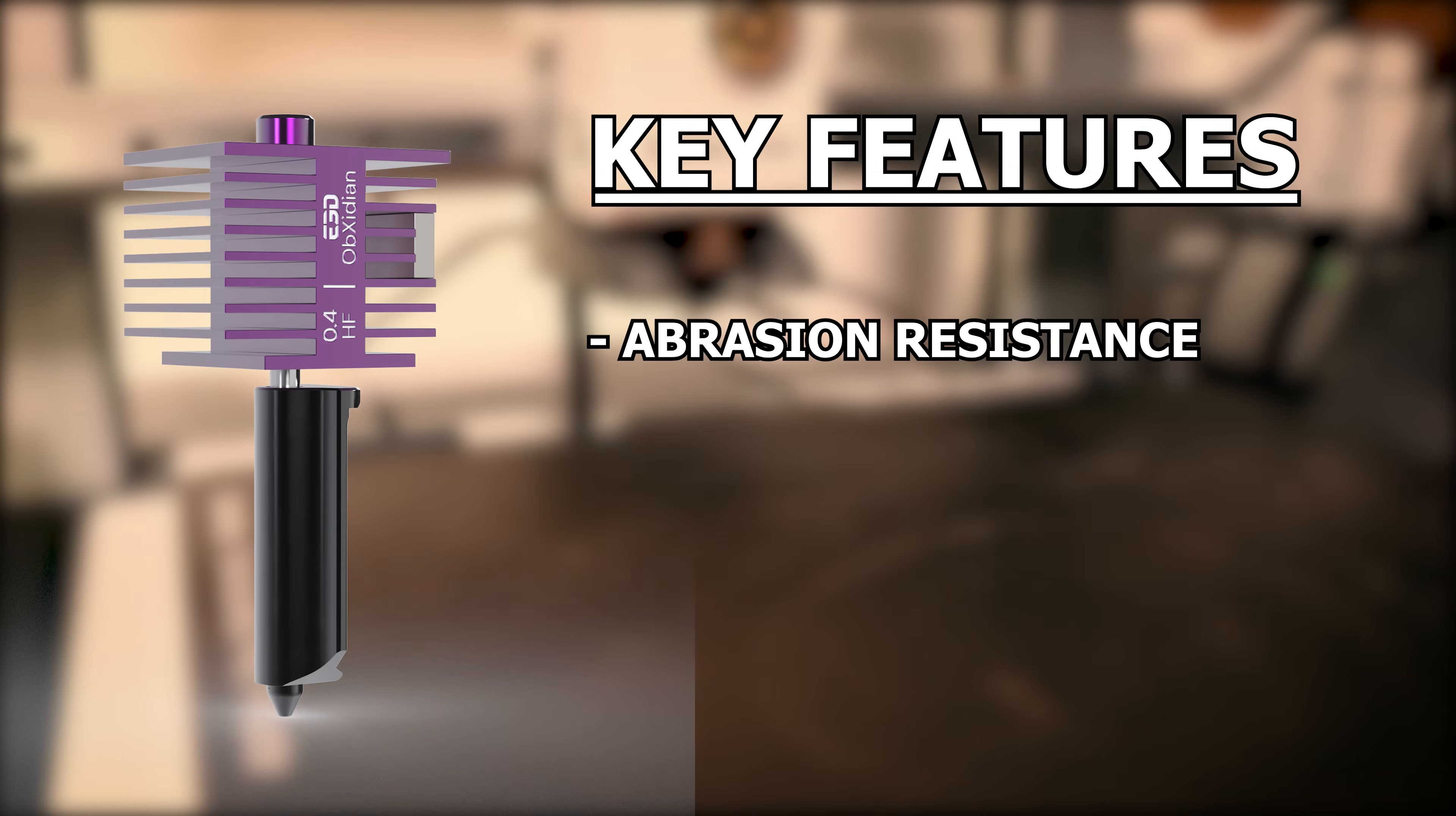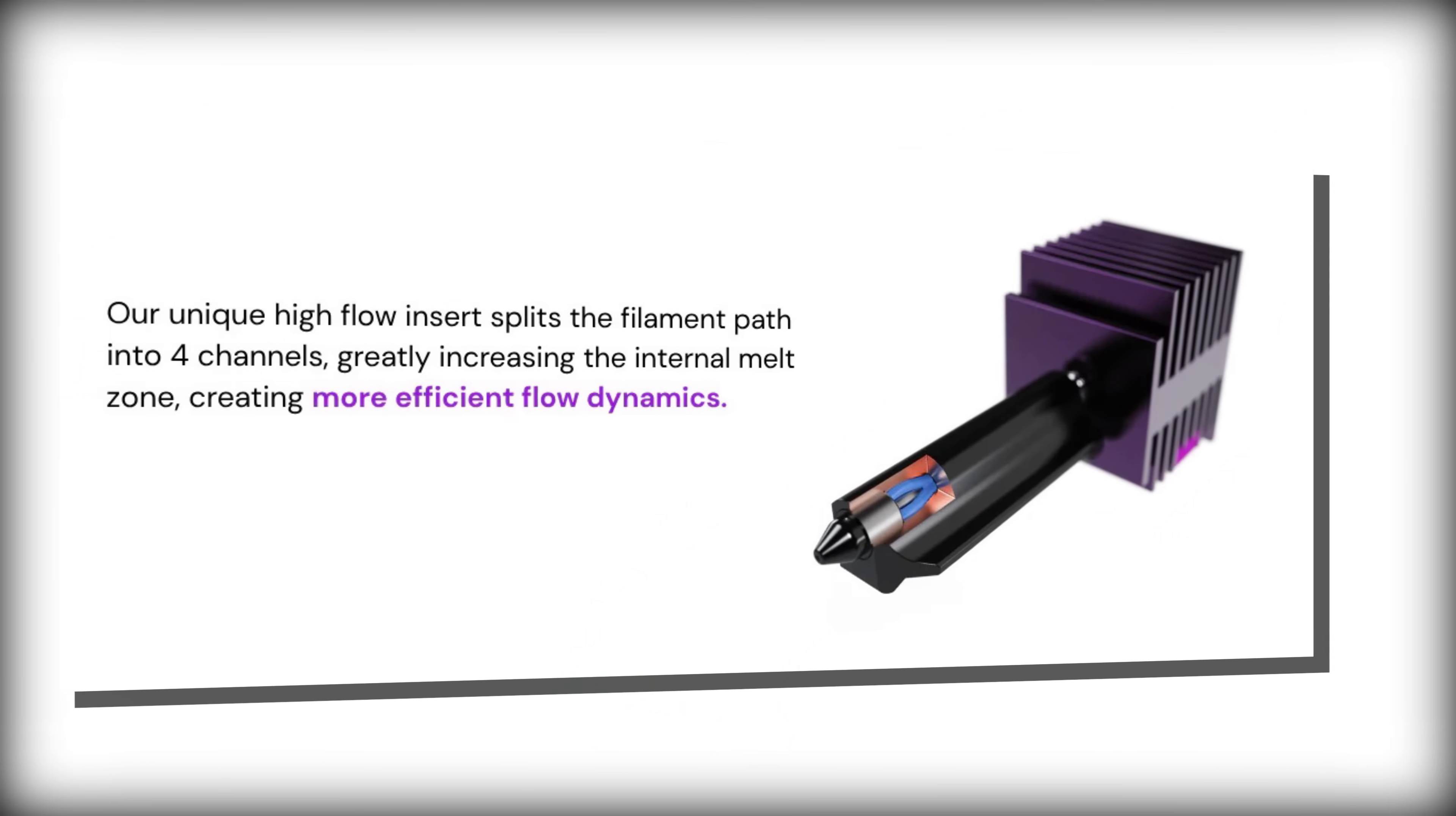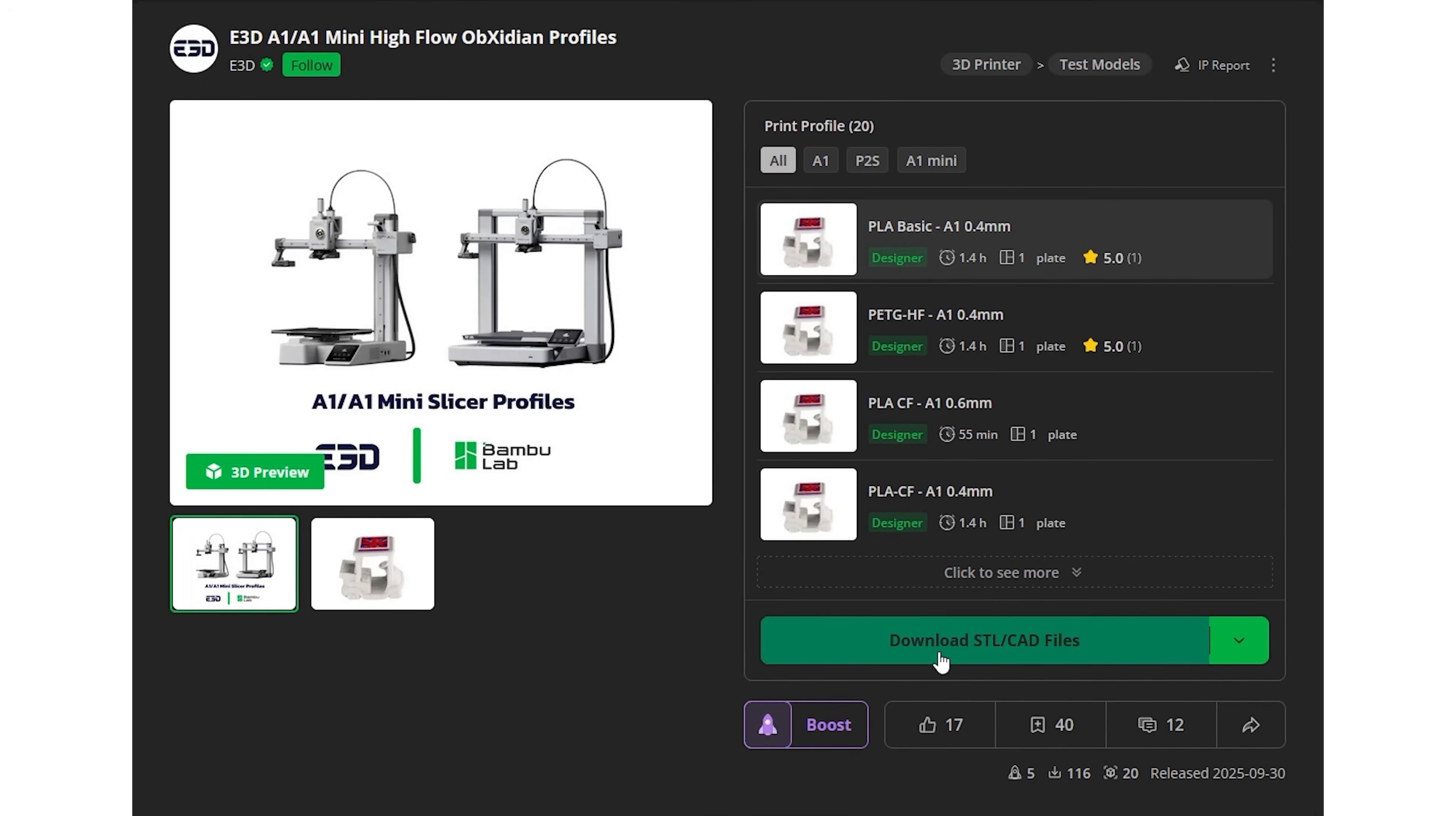Other features include a significant speed boost. This is achieved in two ways. First, the nozzle consists of High Flow Insert, which splits the filament path into four channels instead of one. Second, your slicer settings. E3D has created a slicer profile to be used with the Obsidian Hot End. I'll leave the link in the description.